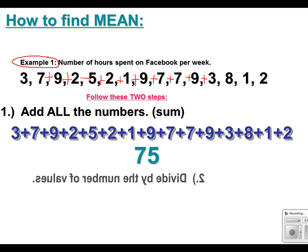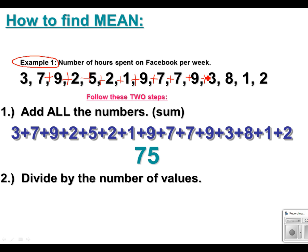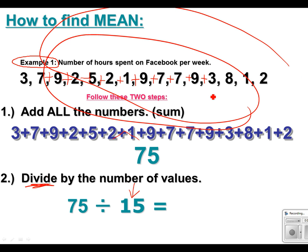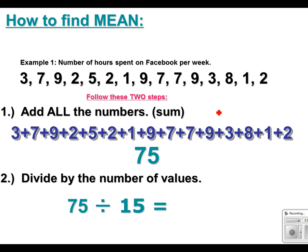The next step is to divide. So finding the average or the mean is a two-step process: adding the numbers and then dividing. The number you divide by depends on how many numbers you have. In this example right here we have 15 numbers, so I'm going to divide by 15. If there are only six numbers we would divide by six, but since there are 15 values, you always want to be aware of how many numbers you're adding up. 75 divided by 15 is five.